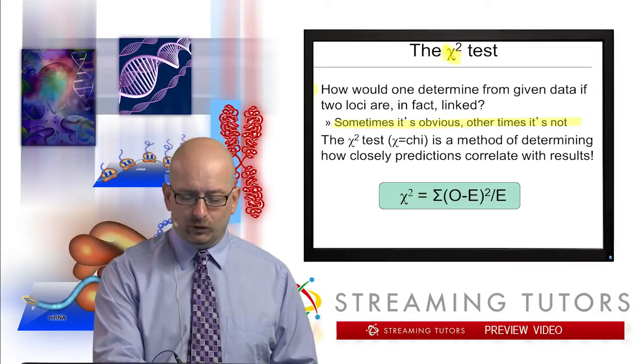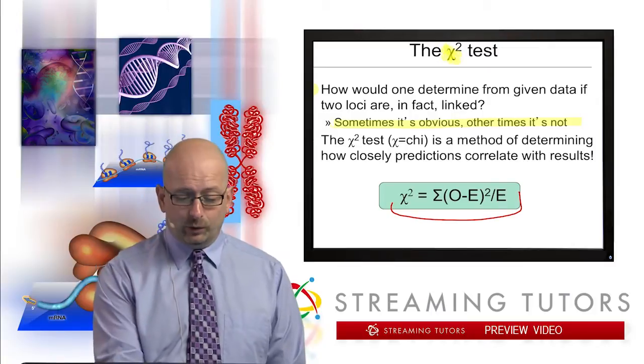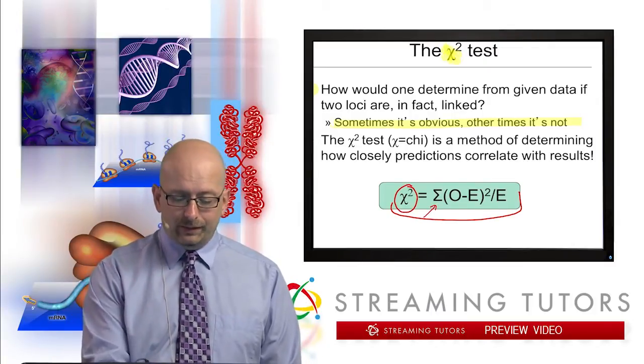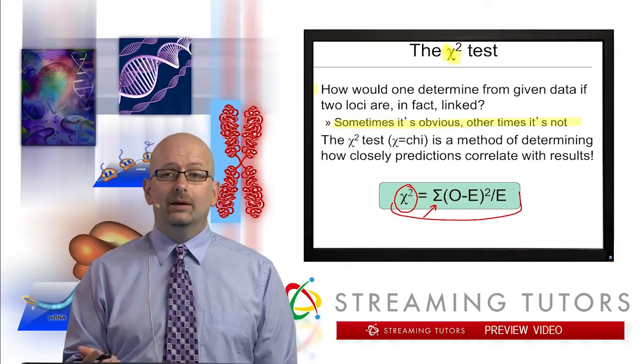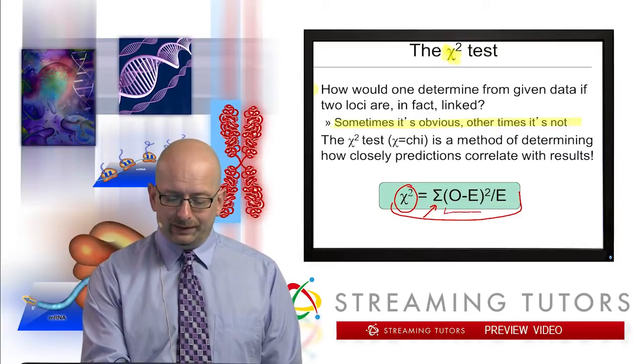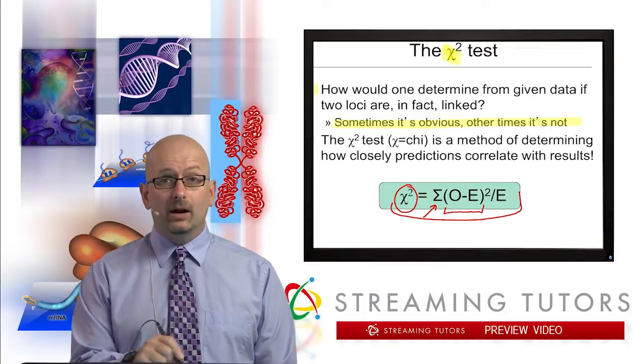And we put it into this fancy looking formula. It looks a lot fancier than it really is here though. In the green box, that is the chi-square formula. So χ² equals, this is the Greek letter sigma. Sigma, you may know, is used to denote the sum.